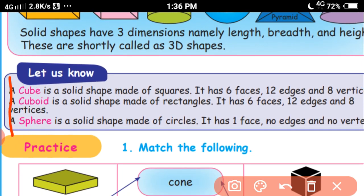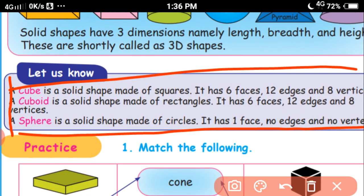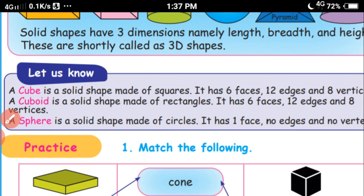This is very important. A cube is a solid shape made of squares. It has 6 faces, 12 edges and 8 vertices. Vertices means corners. A cuboid is a solid shape made of rectangles. It also has 6 faces, 12 edges and 8 vertices. Cube and cuboid have the same features and properties.